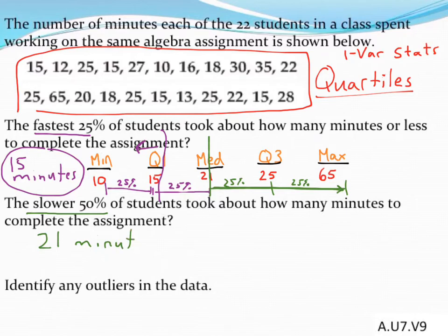So about half our students took 21 minutes or longer to finish this assignment. They could ask you questions about 75%, which would involve that third quartile. But 21 minutes or more to complete the assignment for the slower time.